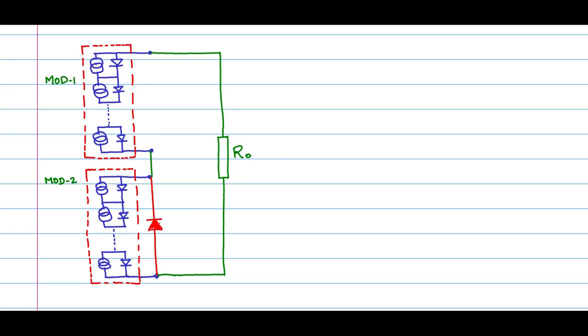So here I have drawn this bypass diode which is bypassing module 2 under conditions when module 2 starts going negative. When module 2 tries to behave like a sink, this bypass diode will effectively take module 2 out of the circuit.